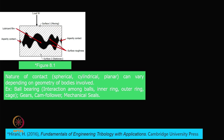Considering tribo surfaces: one surface moves while the other is stationary. If both surfaces are moving, we take the relative velocity u = u1 − u2, so effectively one surface moves at velocity u while the other is stationary. In addition to velocity, an applied load W is also required. When two surfaces are in contact with both a velocity and a load, tribology is bound to happen.